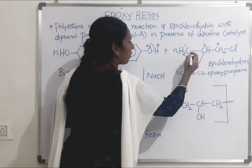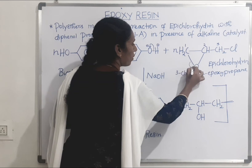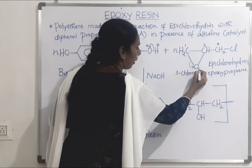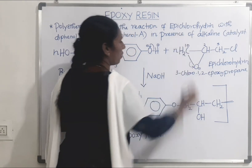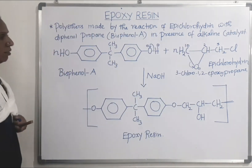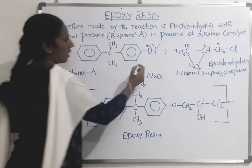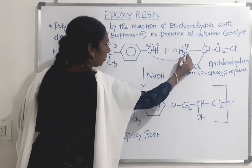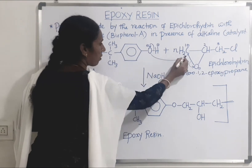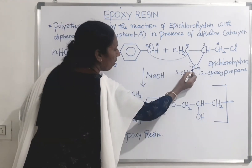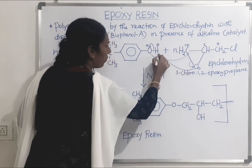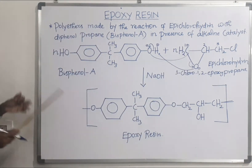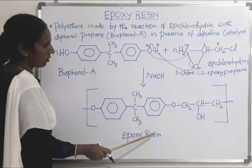Then this bond shifts to this oxygen, so this oxygen gets the negative charge and this carbon gets the positive charge. Then bond formation takes place between this oxygen and this carbon — this phenoxy group and this carbon — and bond formation also takes place between this hydrogen and this oxygen. The product obtained is epoxy resin.